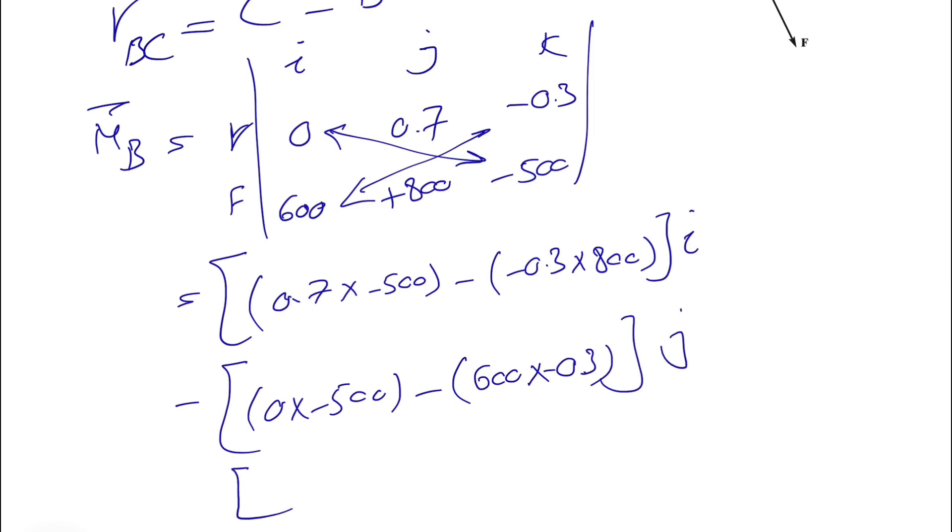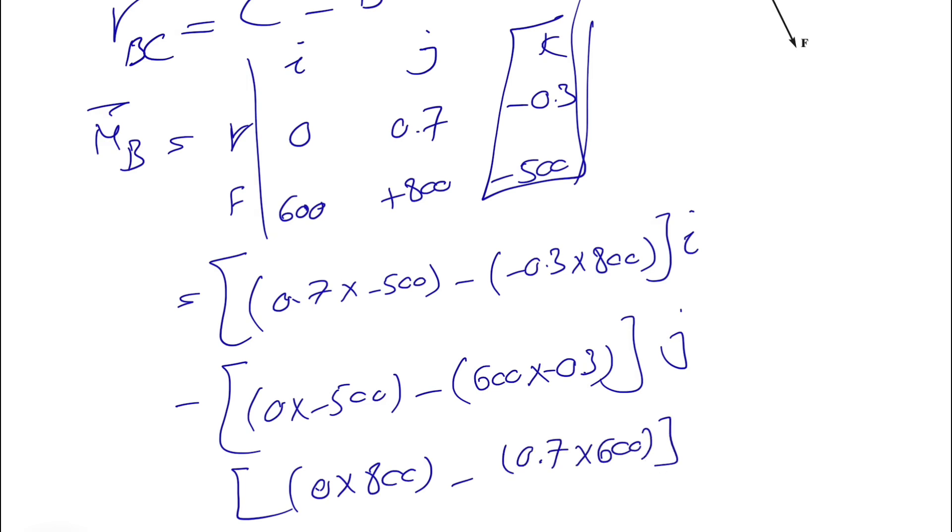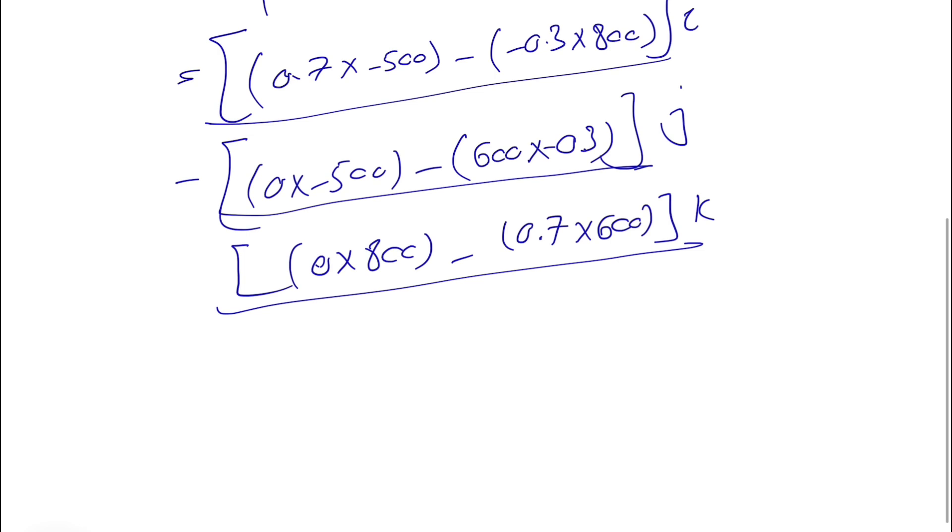And last one is the K. And we're finding the Z component. We're going to cover the Z column. And we have 0 times 800 minus 0.7 times 600. And all we need to do is finding these three, and we're good to go to find the moment.